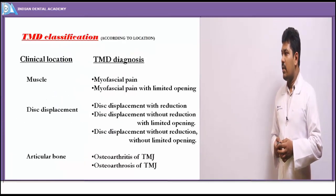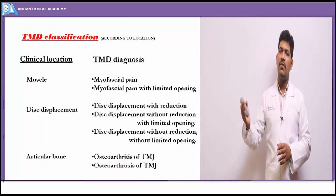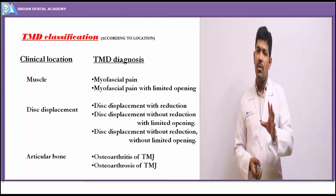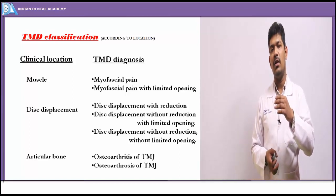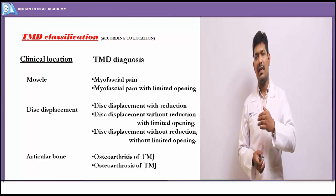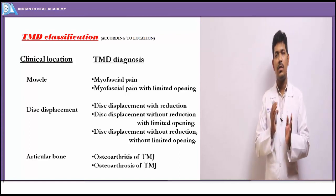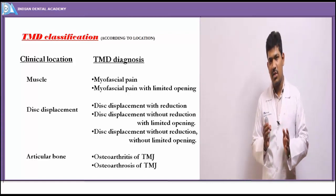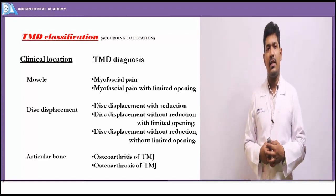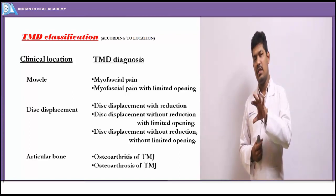Moving into TMJ disorders, the most accepted classification of TMJ disorders is based on the clinical location of the disorder — that is, which part of the TMJ complex is affected. The various TMJ disorders are classified depending upon the location upon which we can identify these disorders in the TMJ complex.